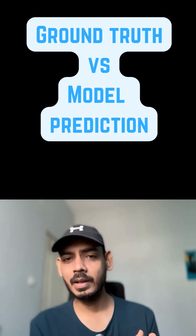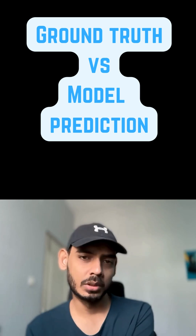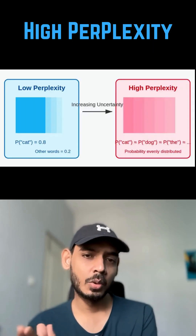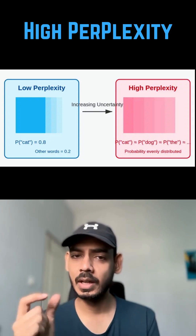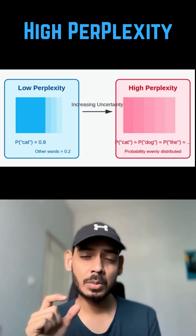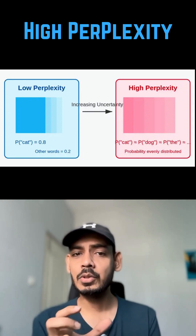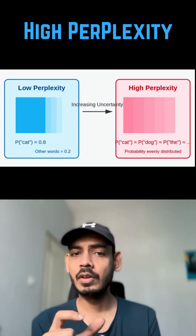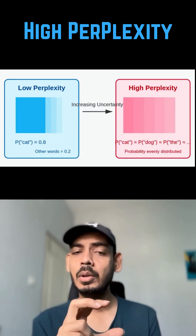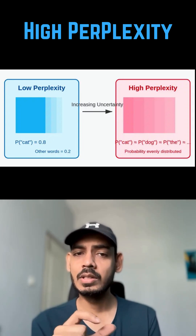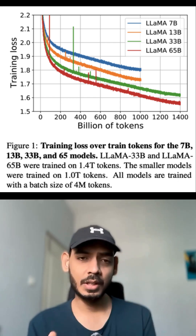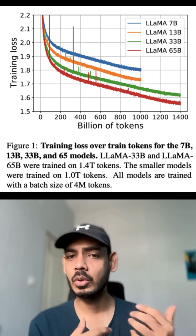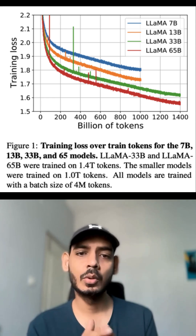Now it will compare the model's prediction with the actual ground truth. So if the model is confused, we'll see the metric perplexity to be high, which means it is confused between various different tokens and is not able to understand which one it needs to pick. So once the loss is reduced, we'll see that the model is more confident and coherent.